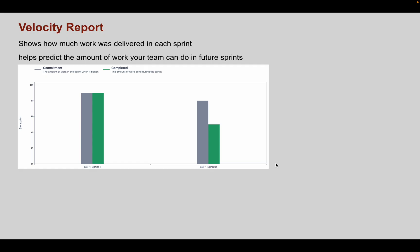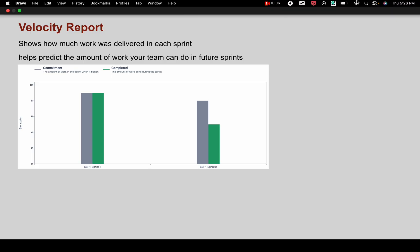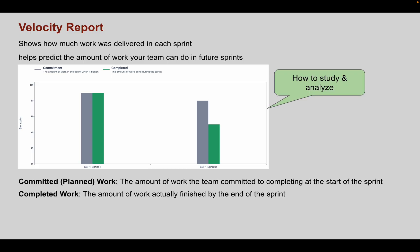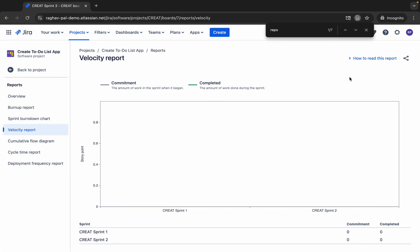This report shows how much work was delivered in each sprint and is very useful for predicting how much work to commit in future sprints. If we consistently see that what we planned or committed is more than what we completed, we know we should start taking on less work in future sprints — based on story points, complexity, or number of issues — or we may need to add more team members. This report helps us check what we delivered each sprint and whether it matched what we planned.